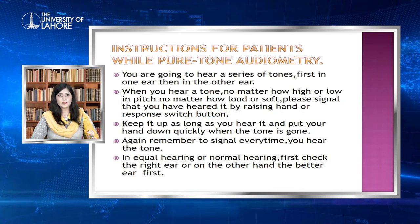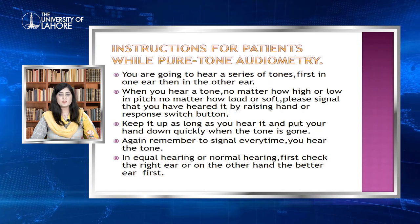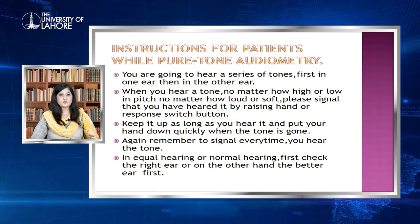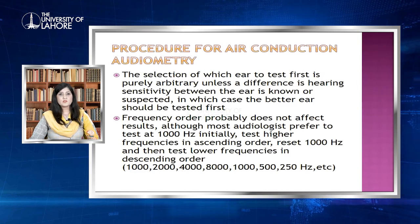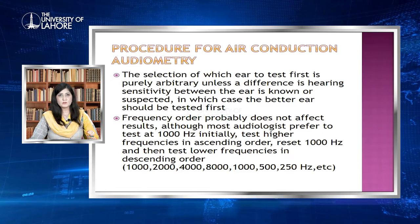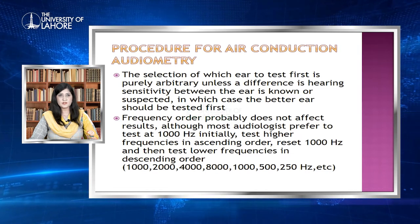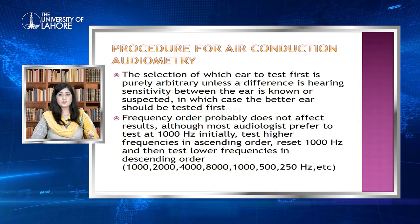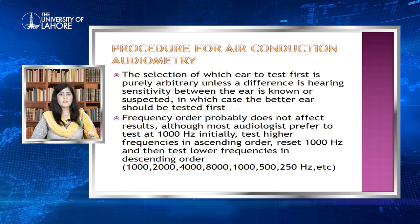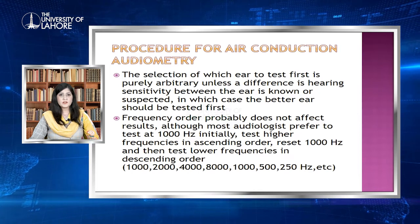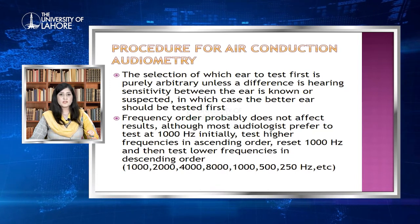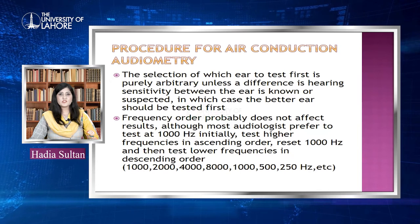In cases of equal or normal hearing, check the right ear or the better ear first. The selection of which ear to test first is purely arbitrary unless a difference in hearing sensitivity between the ears is known or suspected, in which case the better ear should be tested first. It is the clinician's choice, but mostly we take the patient's history to determine which ear is better or suspected of hearing loss, and then check the better ear first.